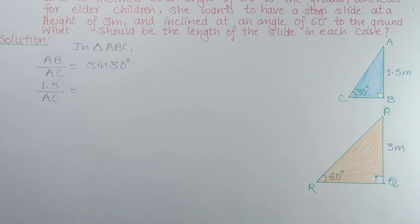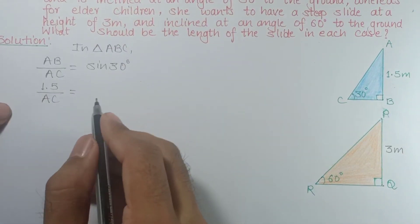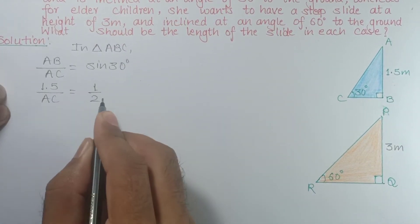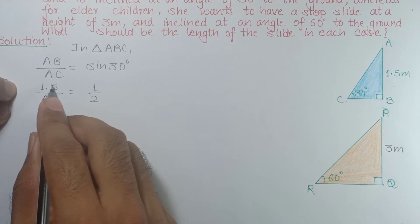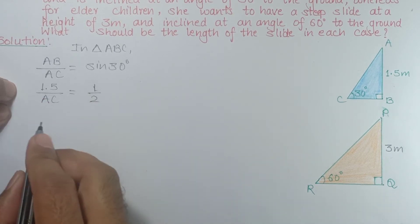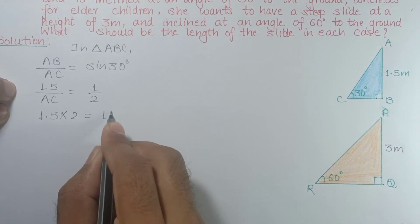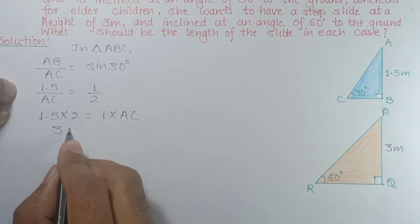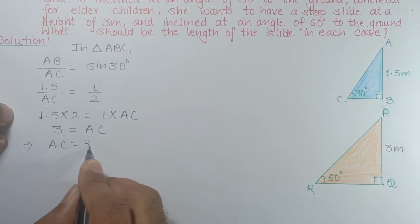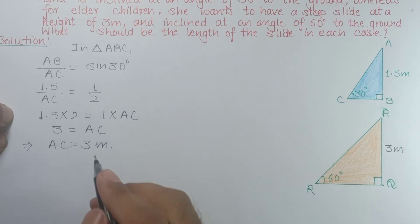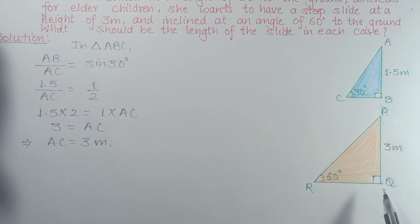The value of sin 30° is 1/2 — you can check the table. So we get 1/2 equals 1.5 upon AC. Cross-multiplying: 1.5 multiplied by 2 equals 1 multiplied by AC. So AC equals 3. Since the height was in meters, the slide length is also in meters. The length of the first slide is 3 meters.